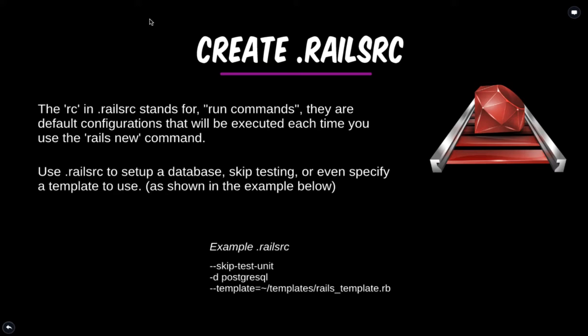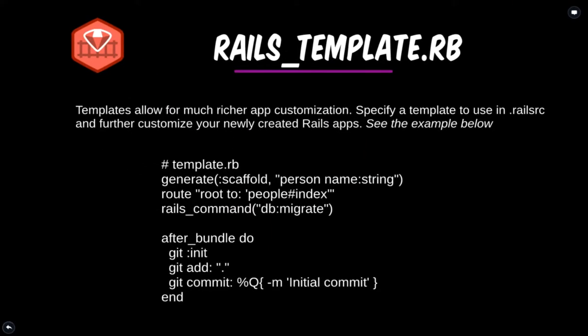You can further customize the application using the domain-specific language in your Rails template. In the Rails template, there are many different things you can do. For example, there's an after_bundle block. After bundle do — it's fully integrated with git, so you can run commands like git init, git add, git commit with an initial commit message. This will set up your project for git, add all of the files, and commit them with the initial commit message after bundling everything.